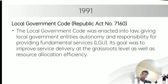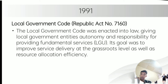In 1991, the Local Government Code was enacted into law, giving local government entities autonomy and responsibility for providing fundamental services. Its goal was to improve service delivery at the grassroots level as well as resource allocation efficiency. Local government units are responsible for implementing social forestry and replanting efforts, managing communal forests up to 5,000 hectares, protecting small watershed regions, and enforcing forest laws.